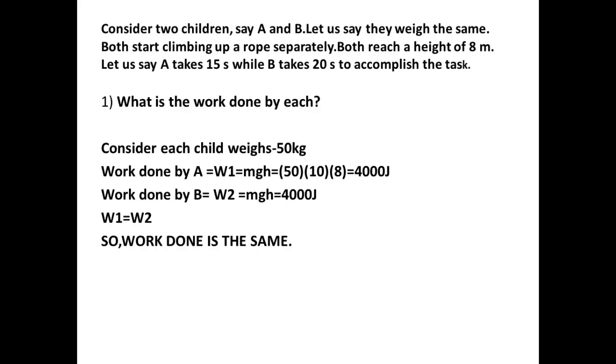We have to consider each child weighs 50 kilograms. The work done by A, which is W1, equals mgh. So the mass 50 kilograms and the gravity we can take rounding off from 9.8 to 10, and the height 8 meters. By simplifying this, we got 4000 Joules. For child B, work done W2 equals mgh. Everything is same, so 4000 Joules. Work done by child A and work done by child B, both the same.